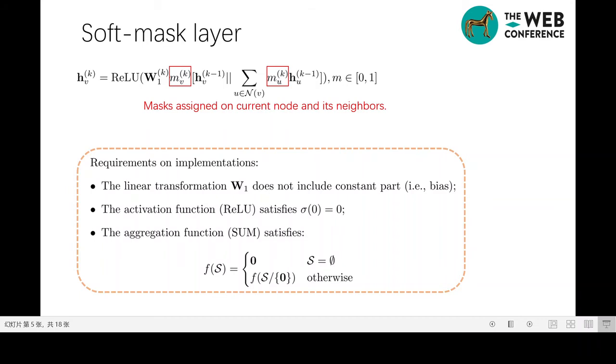To allow GNN layer to extract any given subgraph, we propose the soft-mask layer. M is the mask assignment on nodes. The soft-mask layer satisfies the following constraints: The linear transformation has no constant part. The activation function equals zero at the input zero, such as ReLU. The aggregation function is invariant to the input zero, such as sum. Next, we will show how to leverage the above requirements to extract any given subgraph.